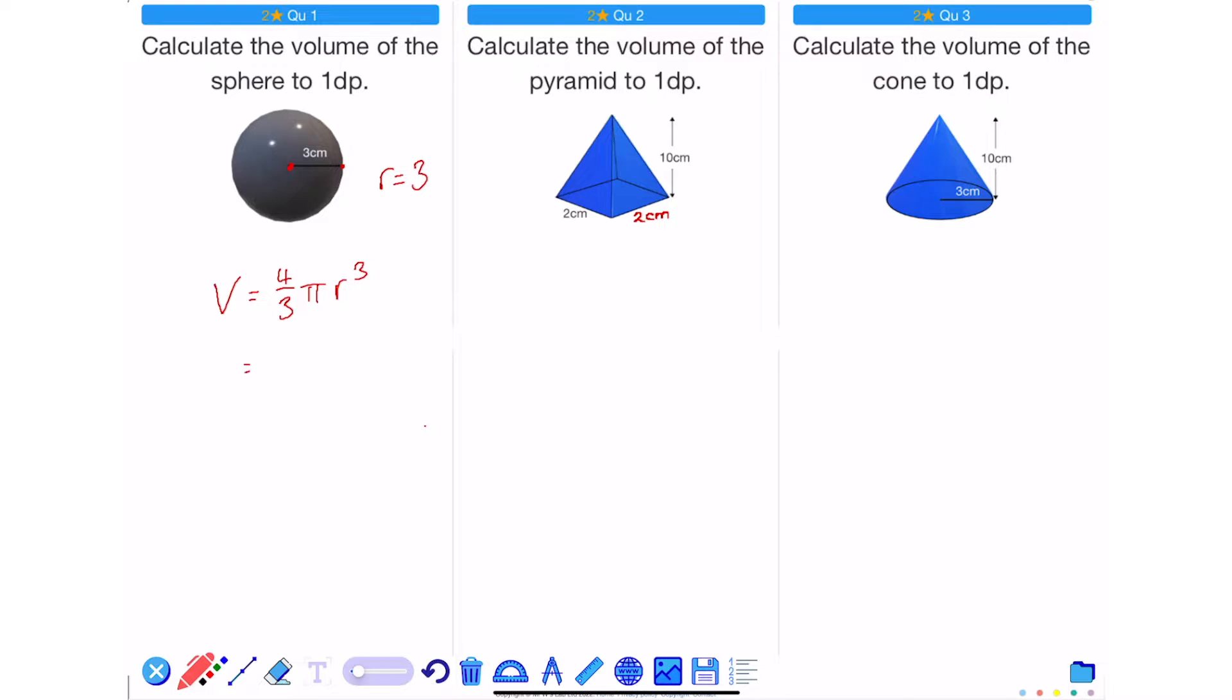Substituting this into my formula, I get 4 thirds multiplied by pi multiplied by 3 cubed. 3 cubed is 27. And finding 4 thirds of 27 gives me 36 times pi or 36π cm cubed.